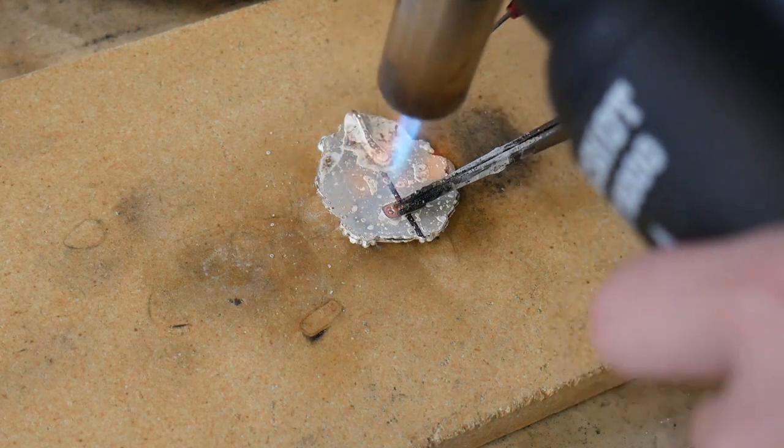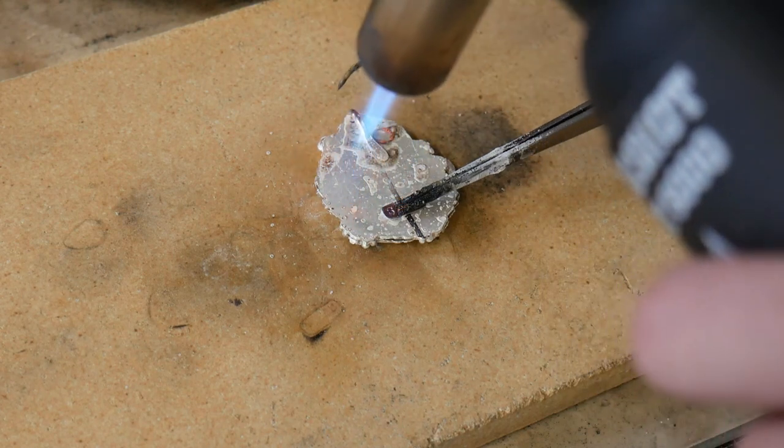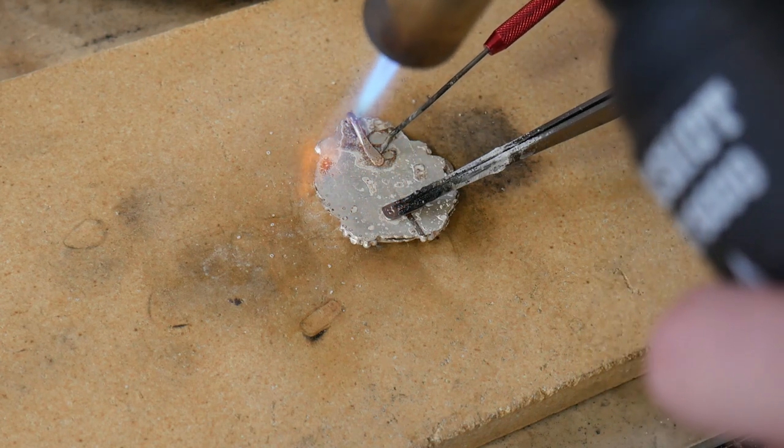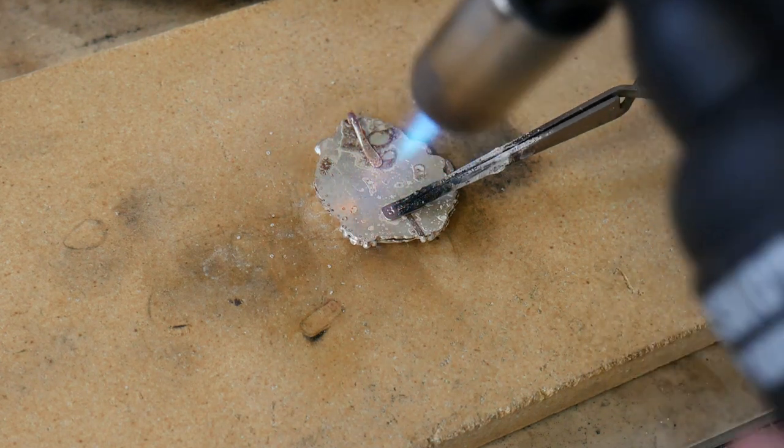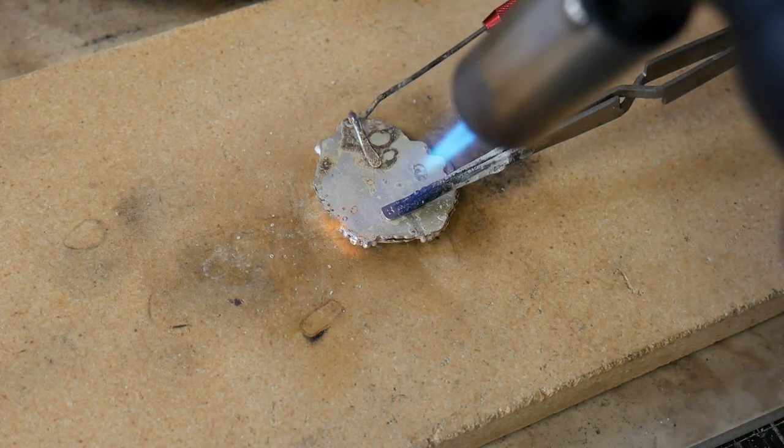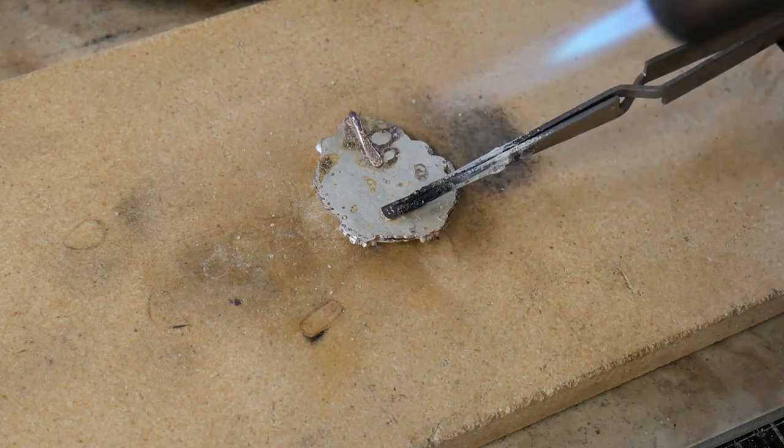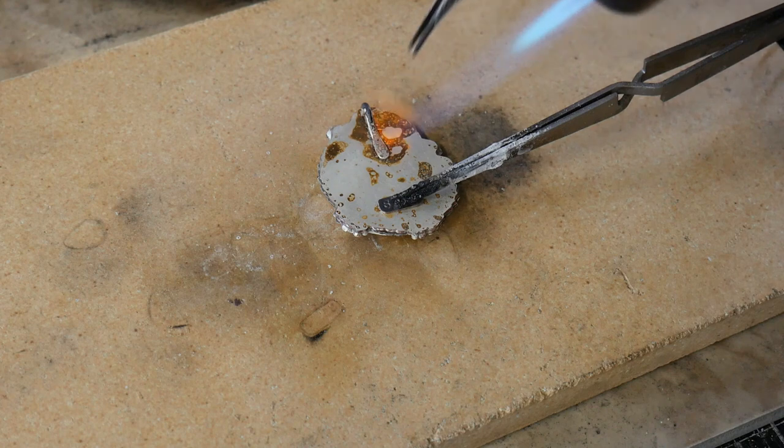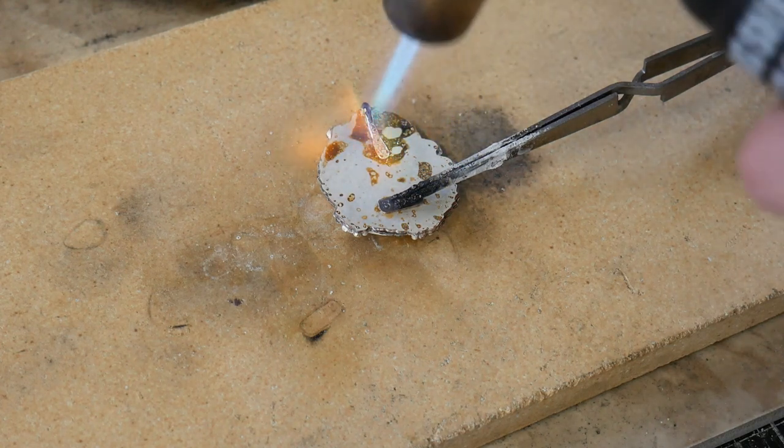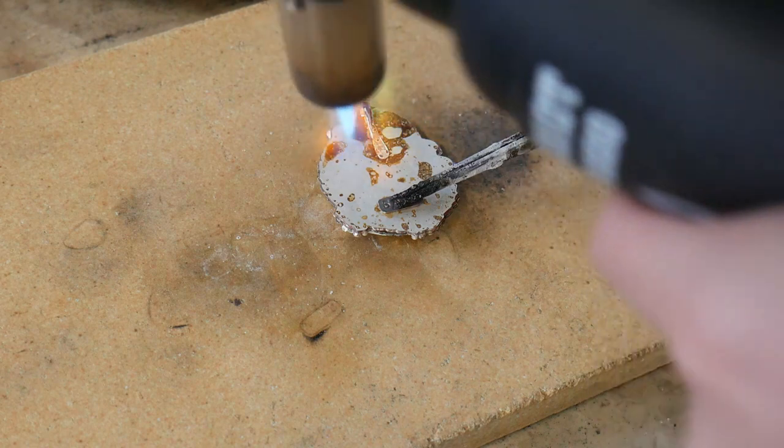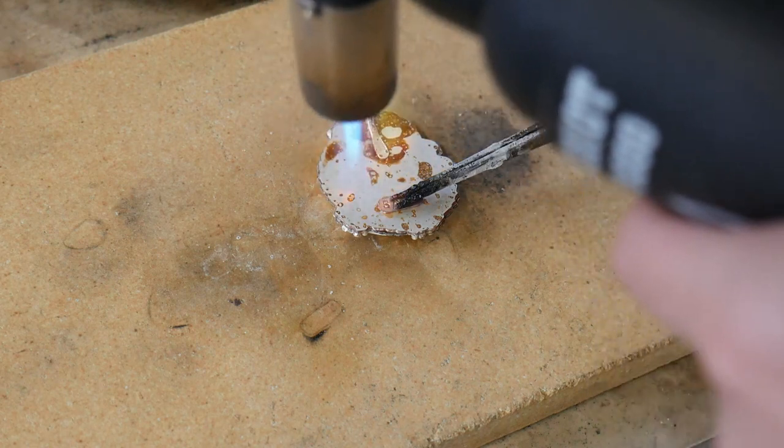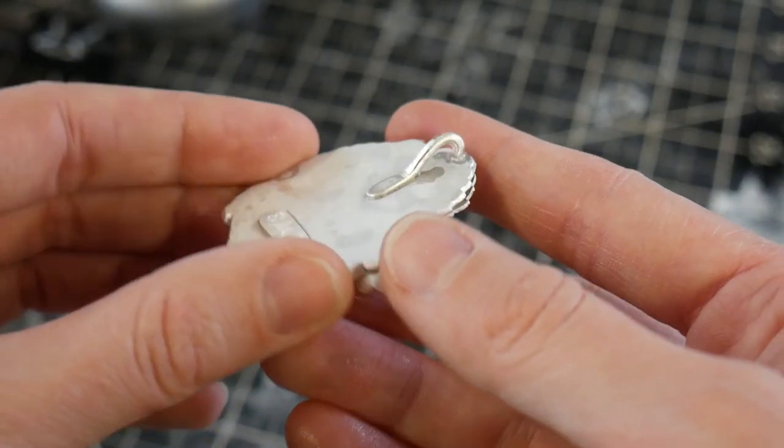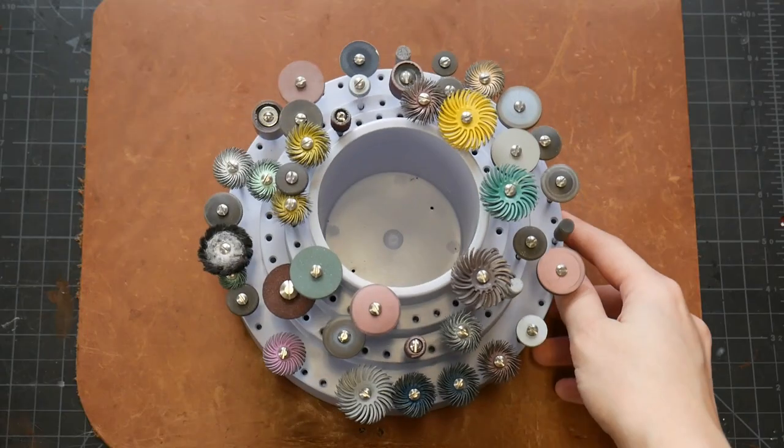Now as you can see as I begin to heat my piece and as the flux starts to bubble a little bit, my bail has started to shift and move so I'm just going to use my solder pick to move it back into place. And as you can see we had a successful soldering operation but now we do have some cleanup to do.